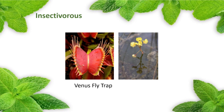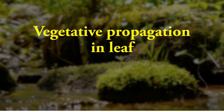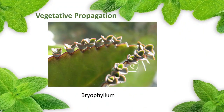Vegetative propagation in leaf — some plants like bryophyllum have fleshy and thick leaves bearing buds on their edges. These buds on the edges of the leaf grow into new plants. When the leaves fall down on the ground, the buds start growing.